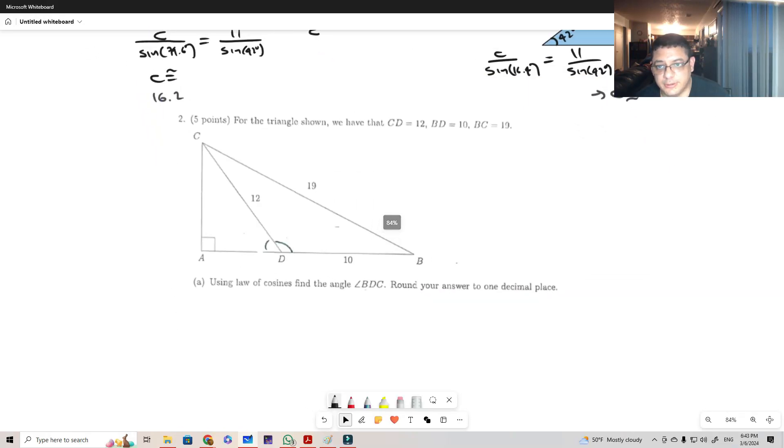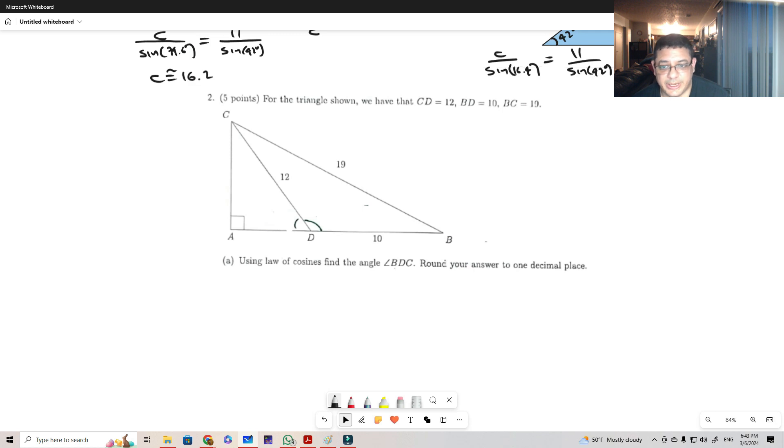Now let's go to the second question. For the second question we have a triangle and notice that we have certain information about this triangle. We have the information that this is 12, this is 19, this is 10. We don't know anything else, this is a right triangle here. It would be good that we can find this angle theta here so we can get some extra information, and that is the angle CDB which is what we're being asked to find. To do that, we set up the law of cosines: 19 squared equals 12 squared plus 10 squared minus 2 times 12 times 10 cosine of theta.